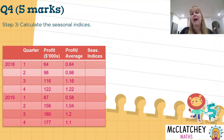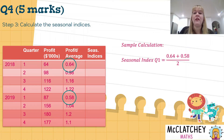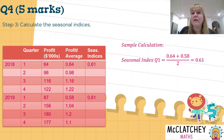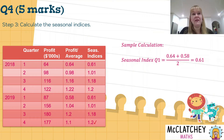Step three: calculate the seasonal indices. To do that we take the corresponding quarter values for each year and average them. For quarter one, we add the 2018 and 2019 values together and divide by two. Showing a sample calculation, the seasonal index for quarter one is 0.61. For quarter two we add 0.98 and 1.04 and divide by two. For quarter three: 1.16 plus 1.2 divided by two. For quarter four: 1.22 plus 1.1 divided by two. Completing all four gives us the third mark.